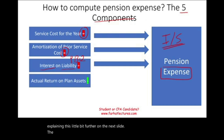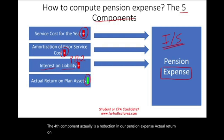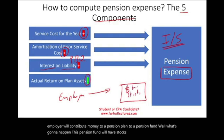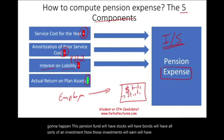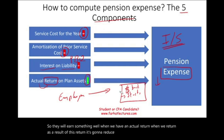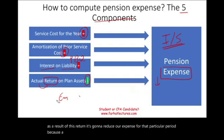The fourth component is actually a reduction in our pension expense: actual return on plan assets. The employer contributes money to a pension fund, and that fund holds stocks, bonds, and all sorts of investments. Those investments will earn an actual return — interest, dividends, royalties, and so forth. When we have an actual return, it's going to reduce our expense for that particular period because the return is the opposite of an expense.